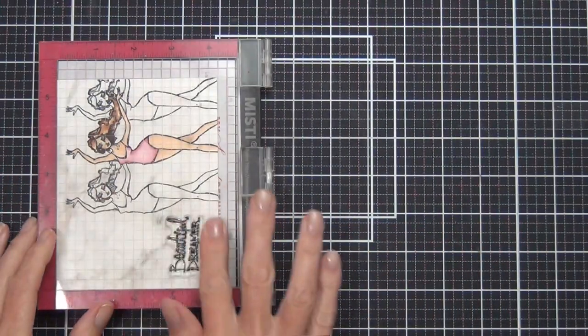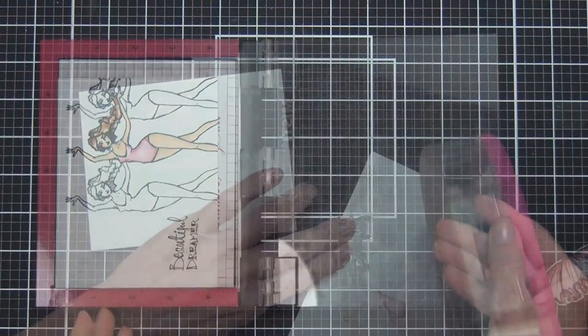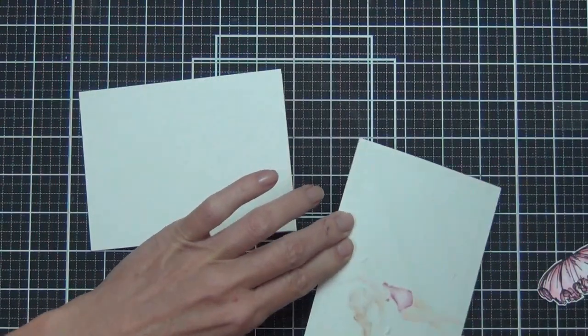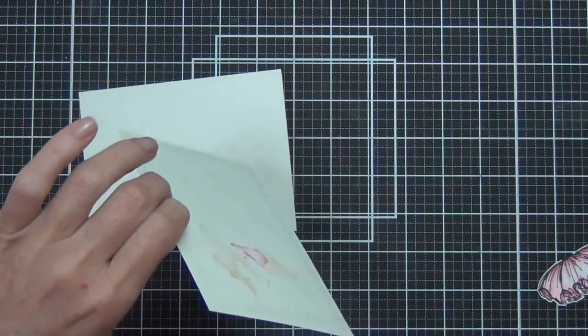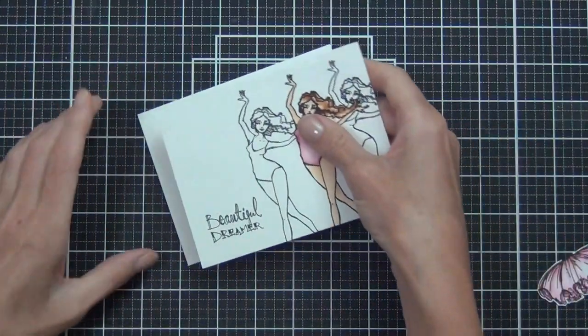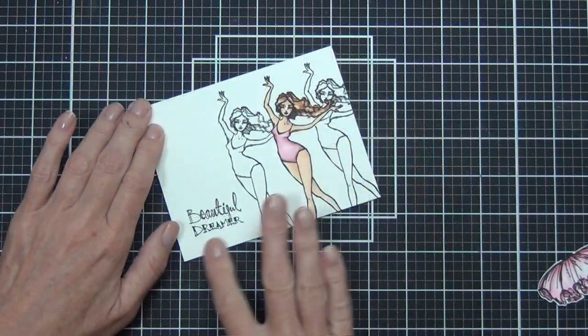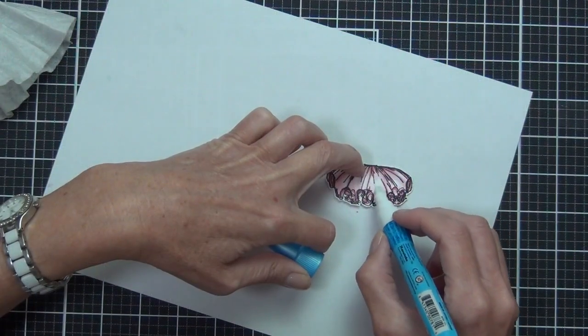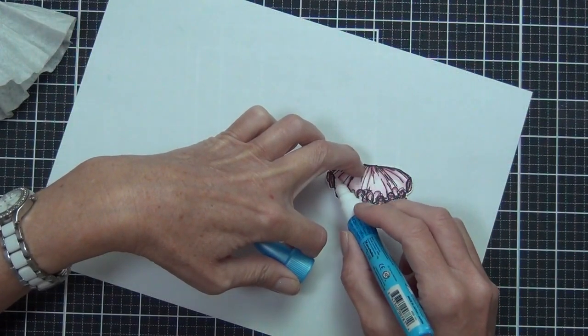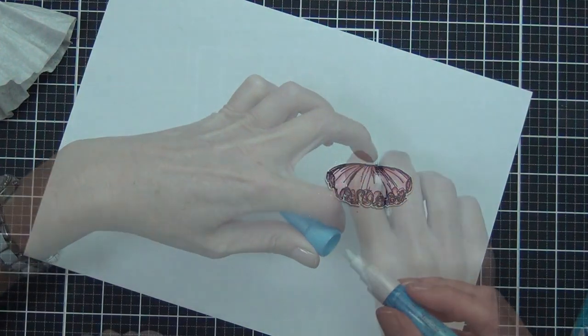I added the sentiment from the set as well, and then I am going to add this to the front of my card. This one's a side fold landscape card and I did also stamp her skirt which comes in the same set and color that.